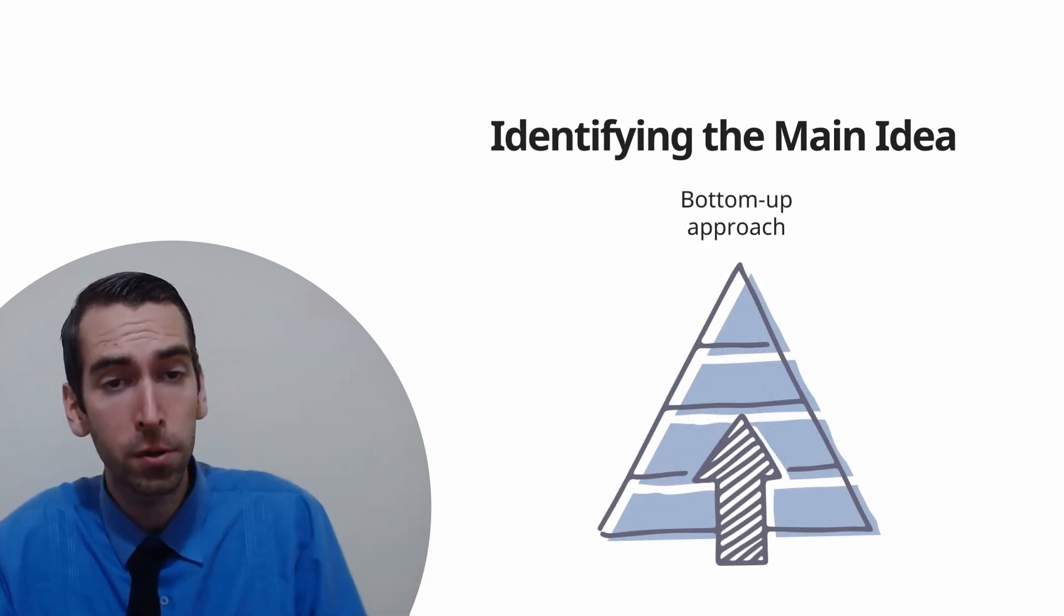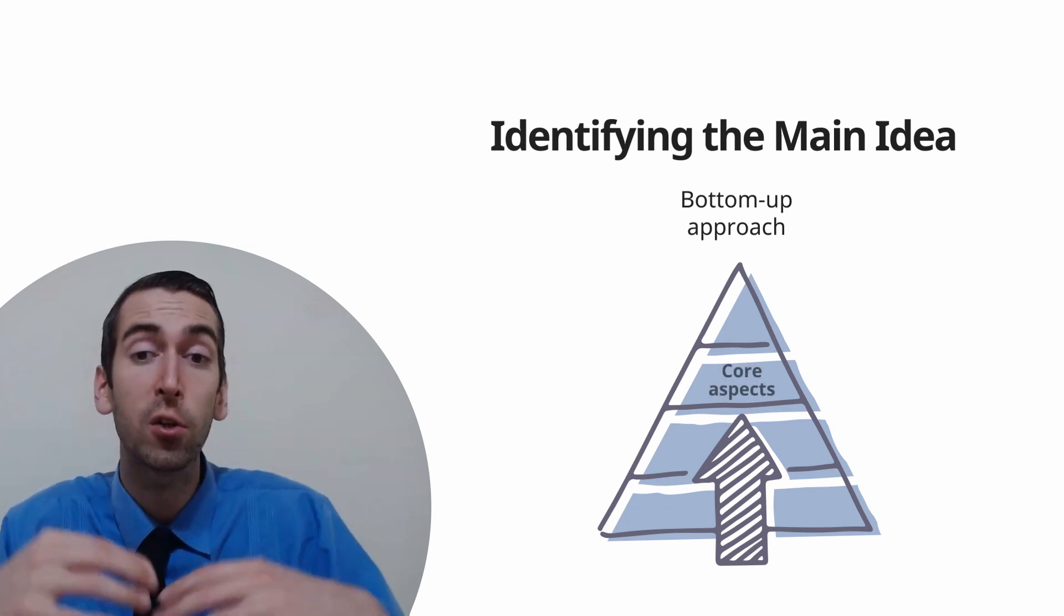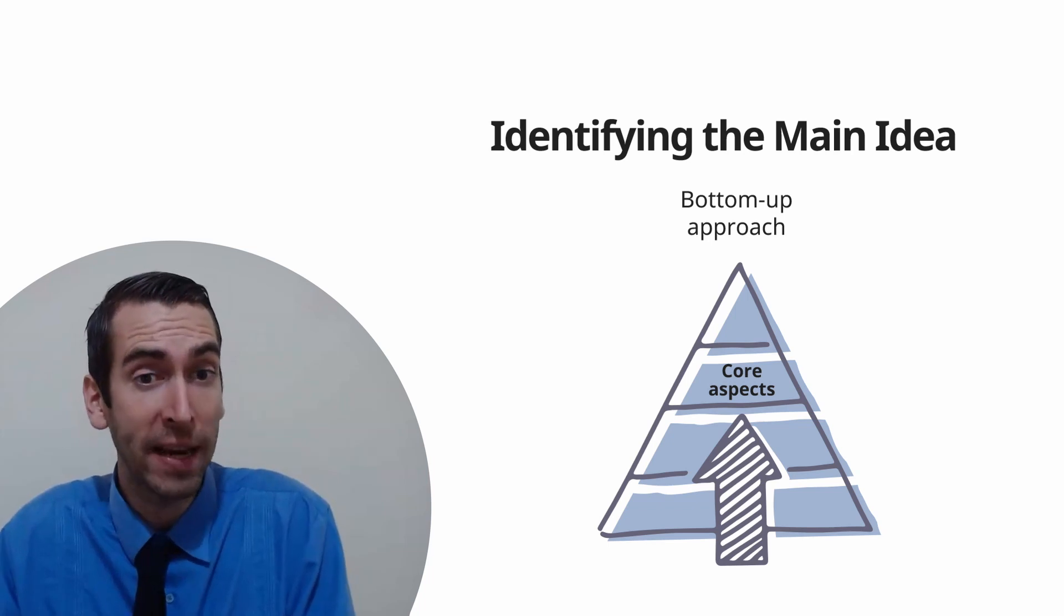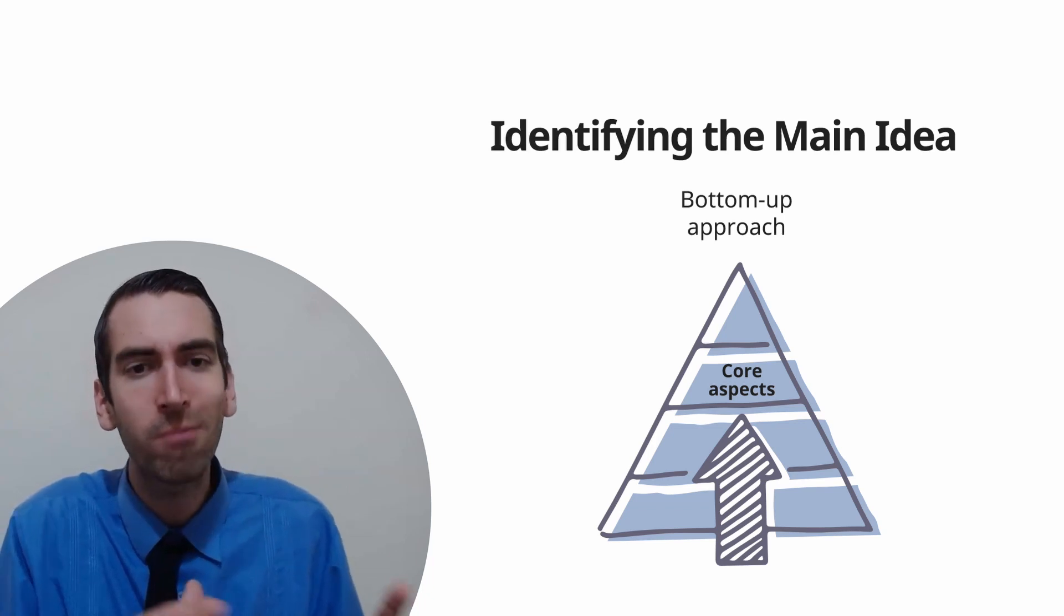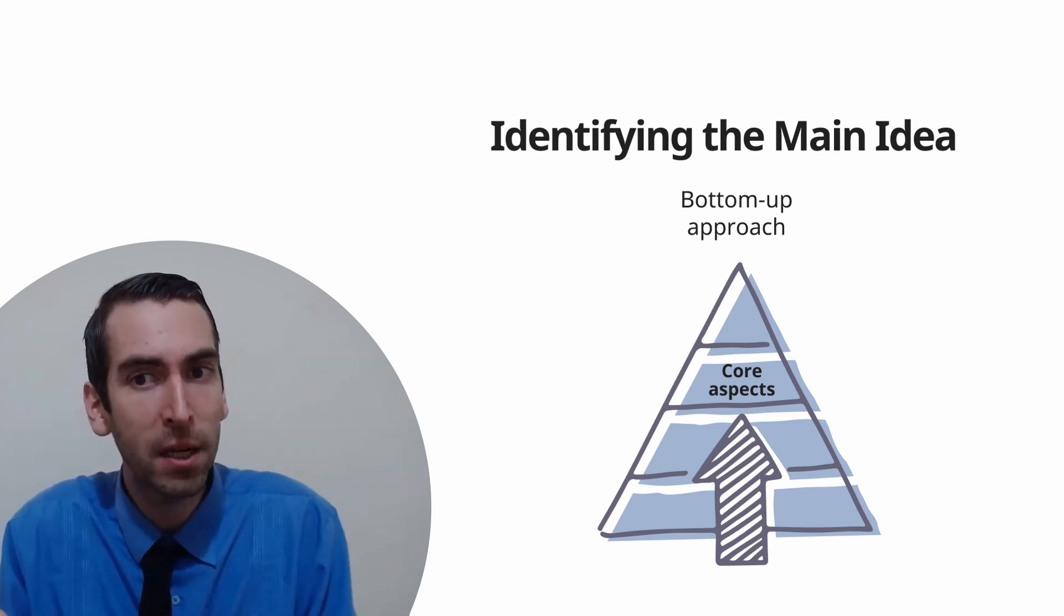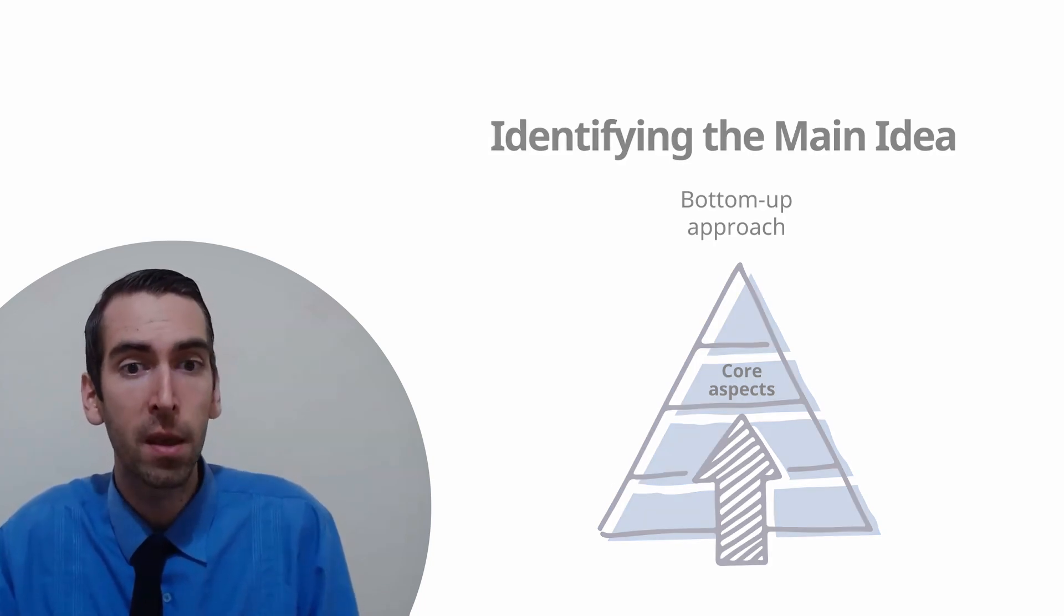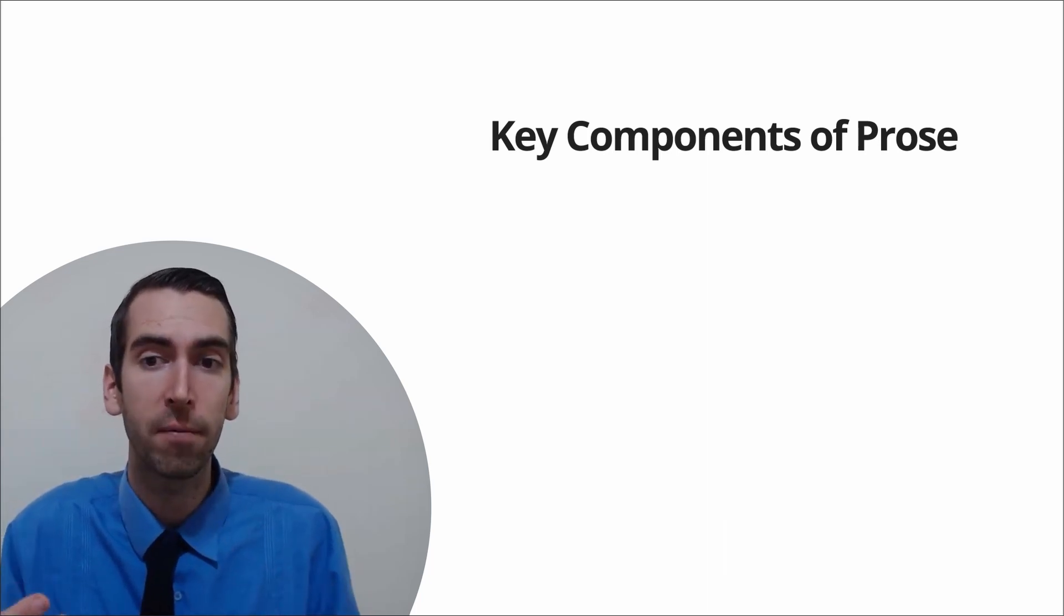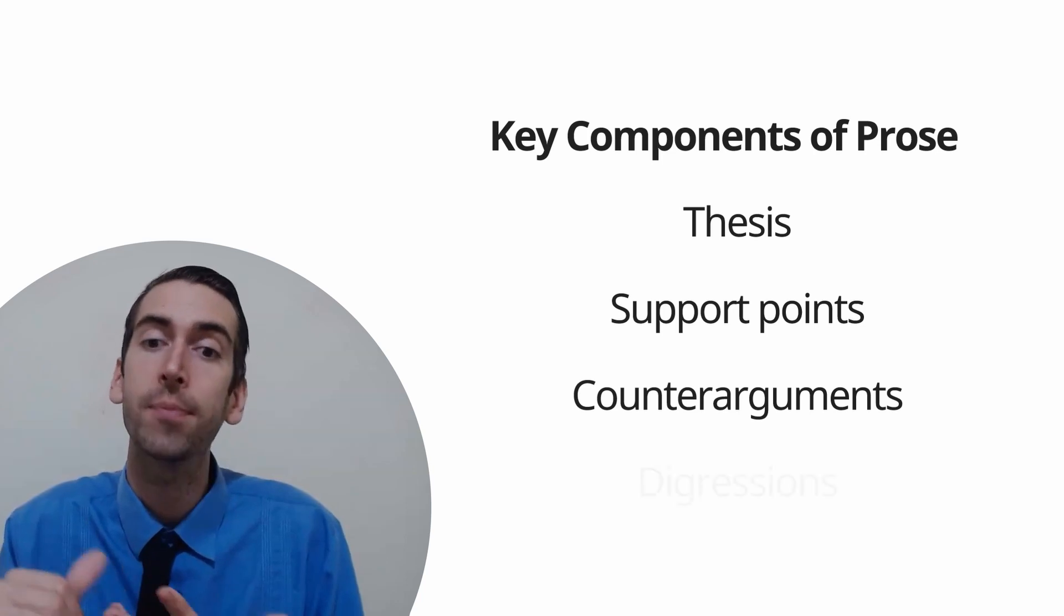Now, the bottom-up approach to identifying the main idea is as follows. We want to look for certain core aspects that we expect to be common in all academic writing. Because remember, these passages are pulled from actual academic journals. Now, there's going to be some overlap with the top-down approach here, so I'm not going to spend too much time defining each of these just right now. But the key components that construct academic prose are the following: Thesis, support points, counter-arguments, and digressions.